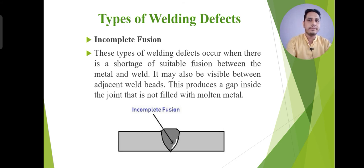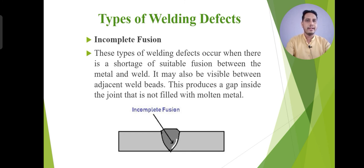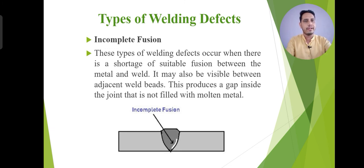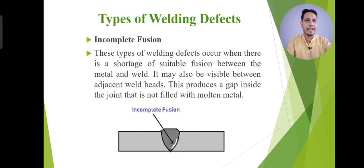Another important defect is incomplete fusion. This type of welding defect occurs when there is a shortage of suitable fusion between the metal and the weld. If you are going to weld any type of material and there is a lack of fusion, it means that the heat temperature is not sufficient to melt the metal, creating this type of defect. It may also be visible between adjacent bead metals. This procedure creates a gap inside the joint that is not filled with molten metal because sufficient temperature was not reached. You can see this clearly in the diagram — this is the metal and the weld bead, and the white line shows that the molten metal is not fully filled, which is called incomplete fusion.